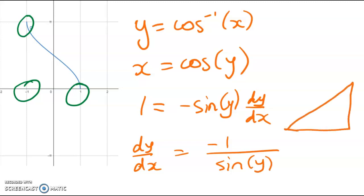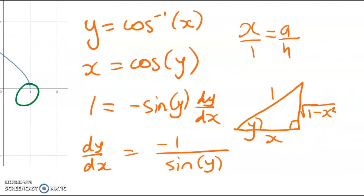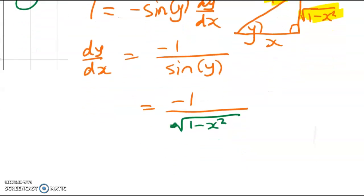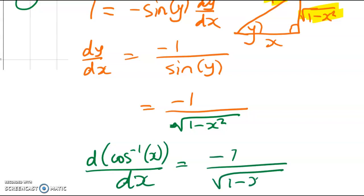dy/dx is equal to negative 1 over sin y. Let's draw our triangle. Bad triangle. Right, there's y. Right, so x is cos of y. So x over 1 is the adjacent over the hypotenuse. Let's just squeeze this in. There we are. So that's doing Pythagoras backwards. So what's sine of y? So it's negative 1 over sine of y which is the opposite over the hypotenuse. Okay, so finishing this one off, we get the derivative of the inverse cosine function is equal to negative 1 over root 1 minus x².